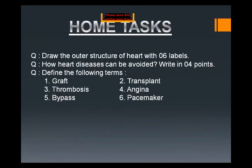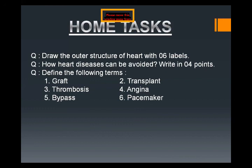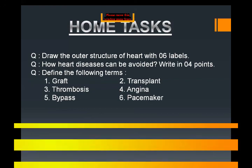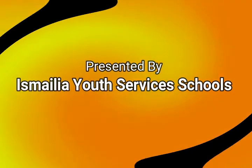Now it is time for the home task. Make a title page of the new chapter. Write down these questions and their answers: draw the outer structure of the heart with six labels; write how heart disease can be avoided with four points; and define the following terms: graft, thrombosis, bypass, transplant, angina, and pacemaker. I hope you all understood today's topic. Thank you students.